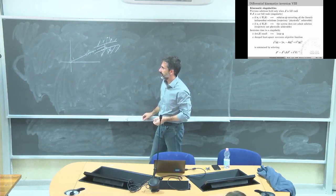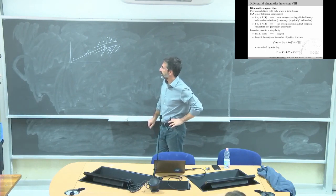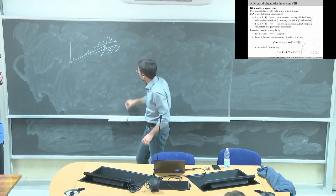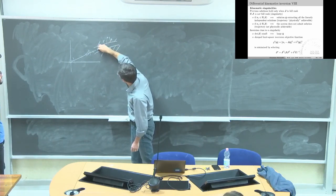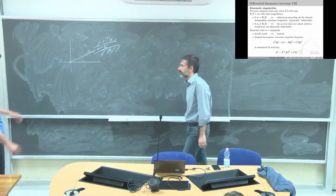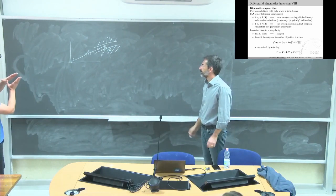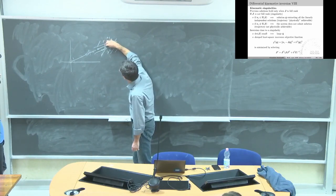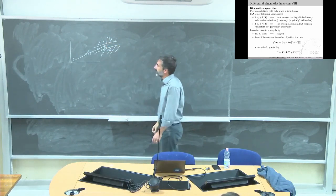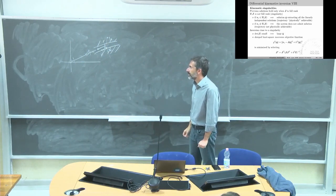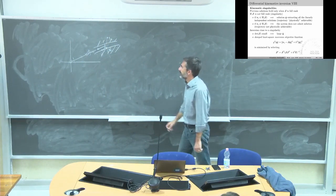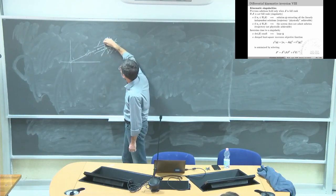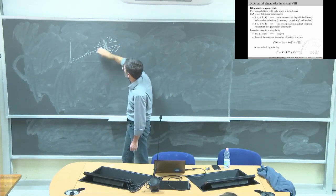Theoretically yes, but instantaneously you cannot have this velocity — you cannot have this direction for the end effector. If you put a constraint without any tolerance, you don't move. Any movement here and here, instantaneously, gives you a velocity in that direction.